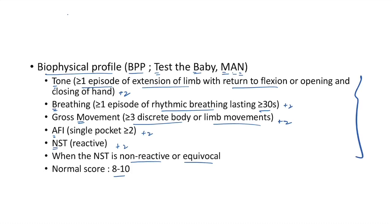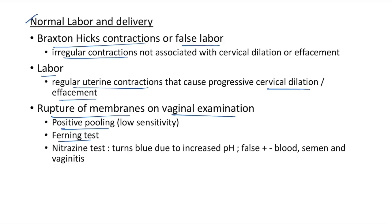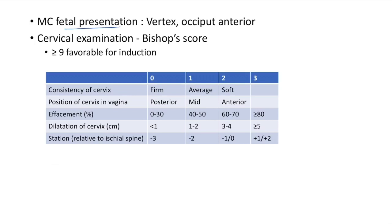Braxton Hicks contractions (false labor) are irregular contractions not associated with cervical dilatation or effacement. Labor is regular uterine contractions causing progressive cervical dilatation or effacement. Rupture of membranes on vaginal examination: positive pooling, ferning test, and nitrazine test indicate rupture. Nitrazine test can be false positive with blood, semen, and vaginitis. The most common fetal presentation is vertex occiput anterior.